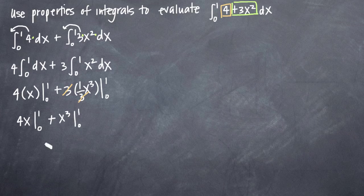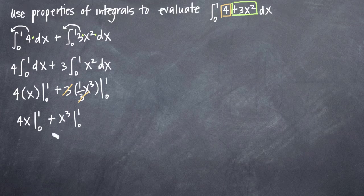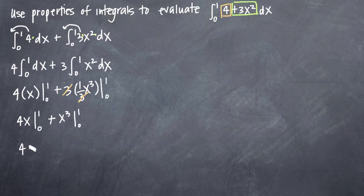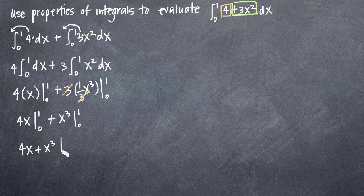And here's another property we can use. Because we're evaluating both of these terms on the range 0 to 1, 4x and x cubed, we can do them separately or we can combine them. So we can say, actually, 4x plus x cubed, all evaluated from 0 to 1.